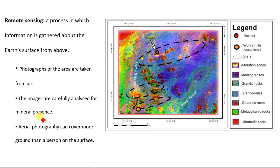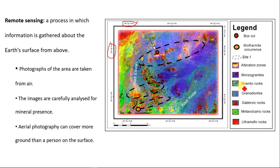With remote sensing, photographs of areas are taken from the air and carefully analyzed for mineral presence. Aerial photographs taken from space can cover more ground than a person on the earth's surface. In this diagram, you can see a typical remote sensing image with coordinates, allowing you to locate specific minerals. Each rock type radiates a different color, allowing geologists to identify zones such as alteration zones, monzo granite, granitic rocks, granodiorite, and gabbroic rocks, extracting those of economic value.